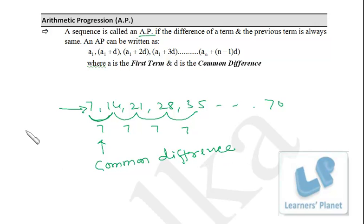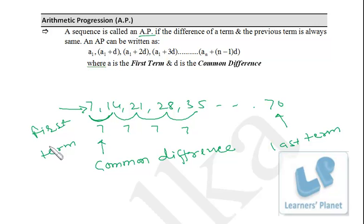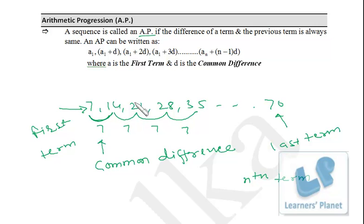In this AP, the first term is 7 and the last term is 70. Sometimes the last term may not exist if the sequence is infinite. In that case, we define the nth term. The nth term here is 7n — because all terms are multiples of 7. If you put n=1 you get the first term, n=2 gives the second term, and so on. So the first term is 7, the last term is 70, and the common difference is 7.